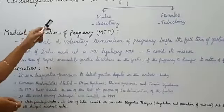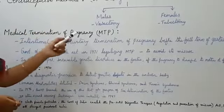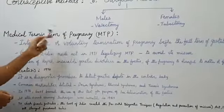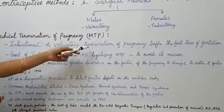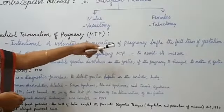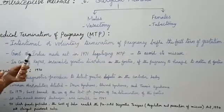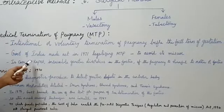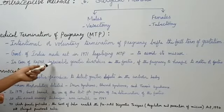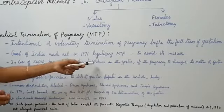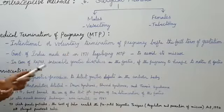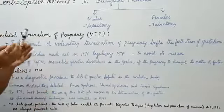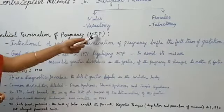Along with these contraceptive methods, you have to learn about the medical termination of pregnancy and amniocentesis also. Intentional or voluntary termination of pregnancy before the full term of gestation period is called as medical termination of pregnancy. In cases of unprotected pregnancies, or in cases of rape, or in cases of incurable genetic disorders in the fetus, or if the pregnancy is harmful to the mother or fetus, then they go for the medical termination of pregnancy.